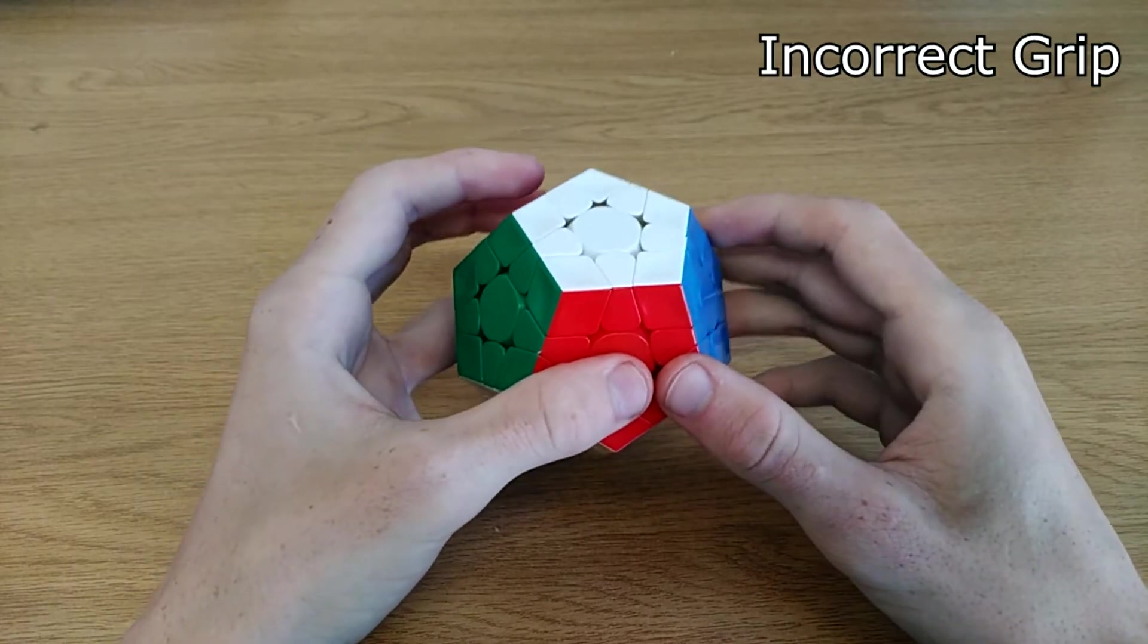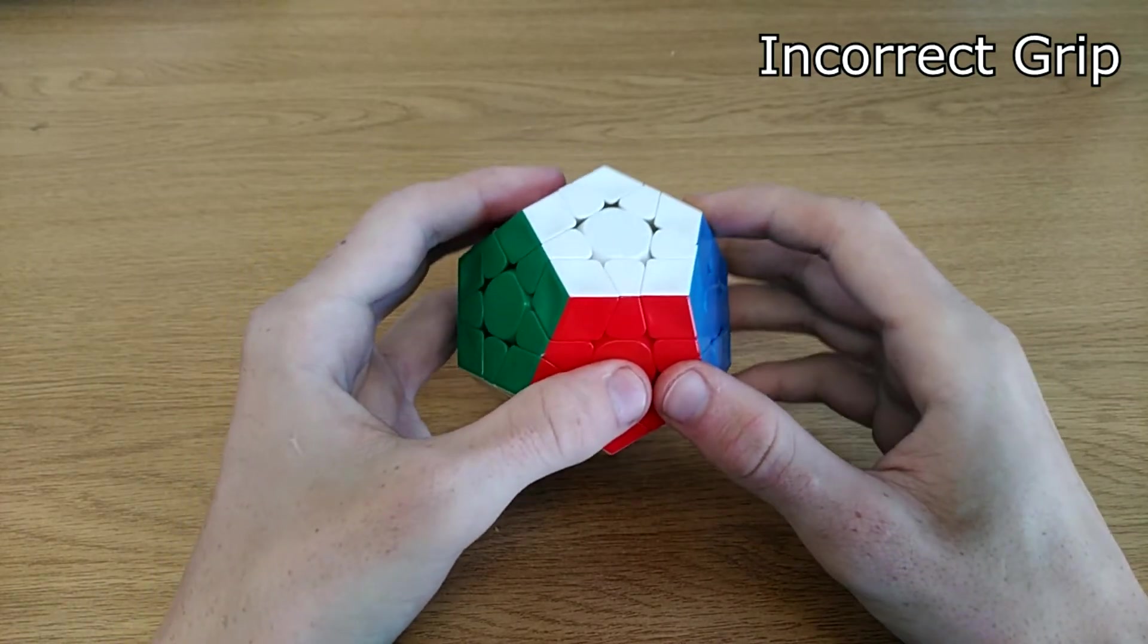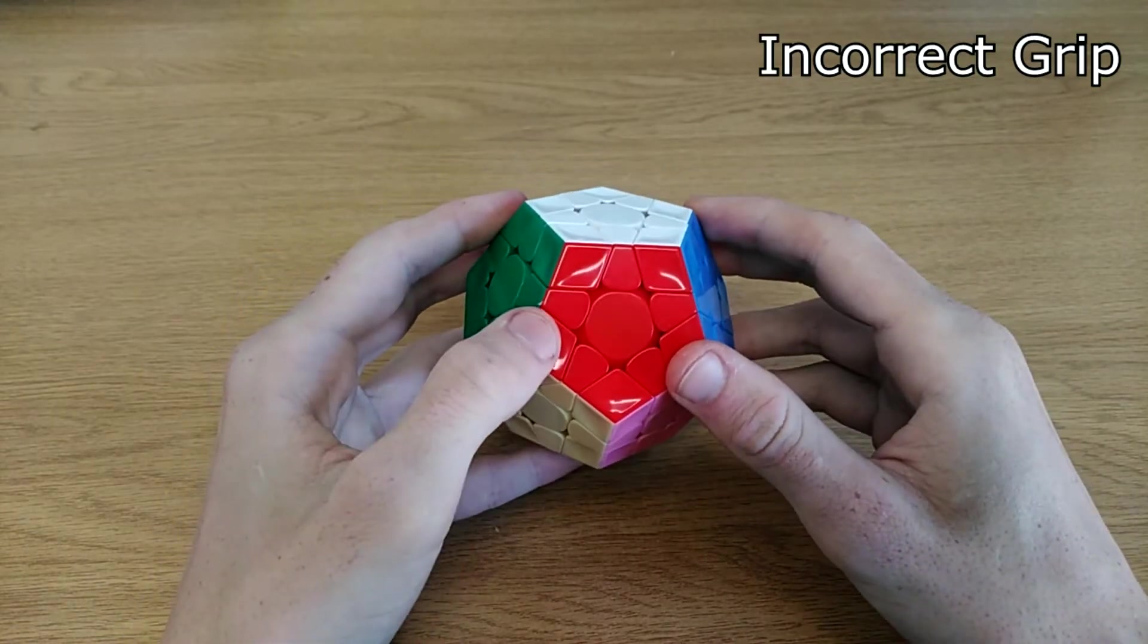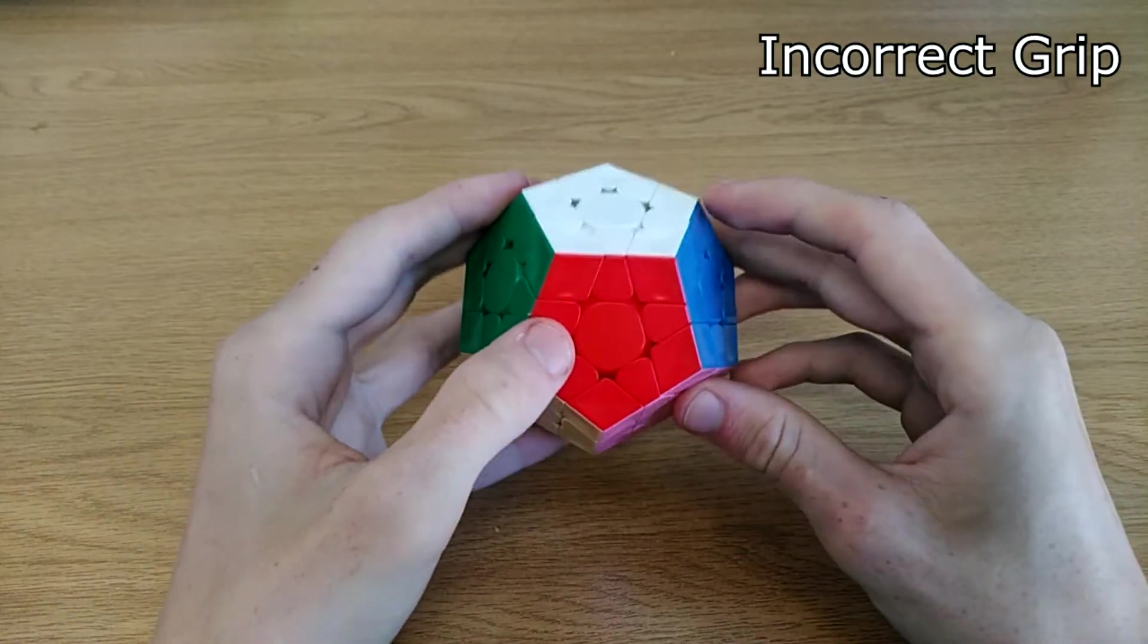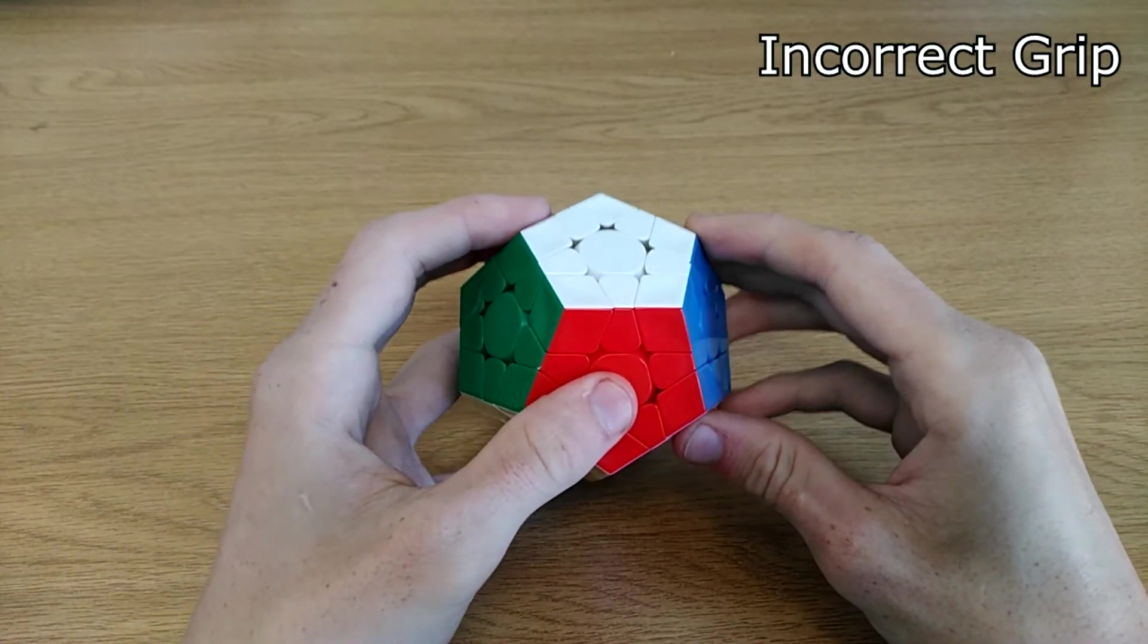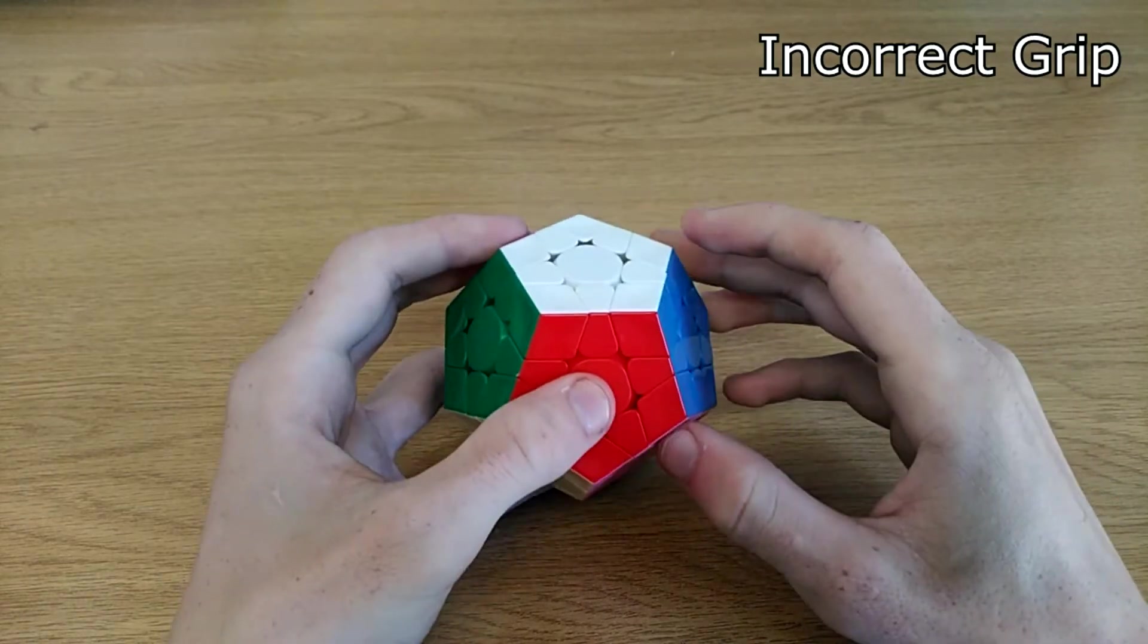If you didn't hold the cube like this, then in the beginning it will hurt your pinky, but you will have to fight through this discomfort if you want to be able to do advanced finger tricks. If you learn how to grip the cube correctly, then you will be able to do any finger trick.